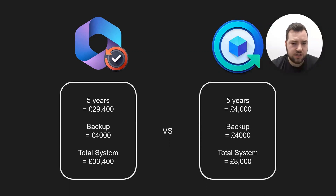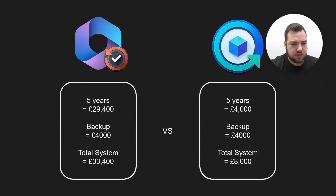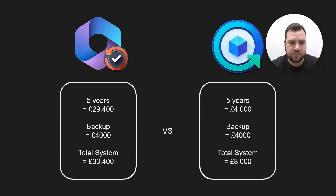That's quite a considerable saving. If we then look at backups — you obviously need to back up your data — we're using Active Backup for Microsoft 365 and the same DS1821+ on the Microsoft side, adding around £4,000 on top, giving a total system cost of around £3,400. On the Synology side, we replicate what we built using the license-free software with Hyper Backup, and our total system cost is around £8,000.